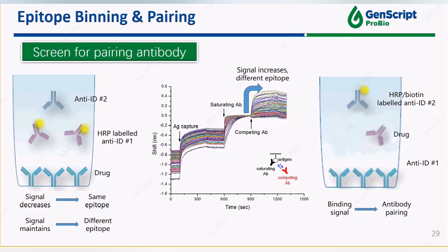In the sandwich ELISA, one of the anti-IDs is coated on the plate as a capture antibody, and the other anti-ID is used as a detection antibody. Successful pairing will form a complex with the drug IgG in between.